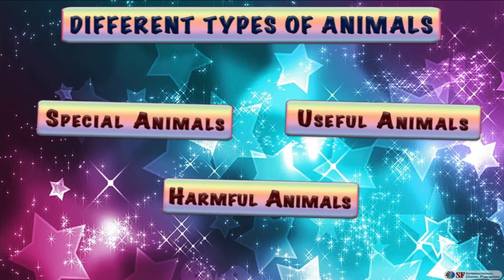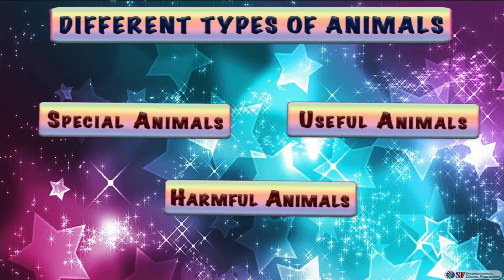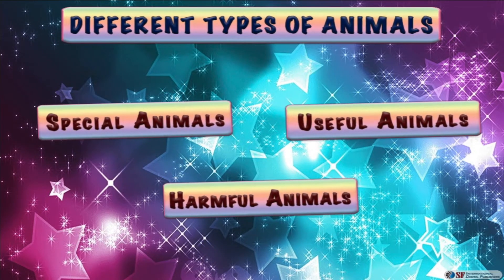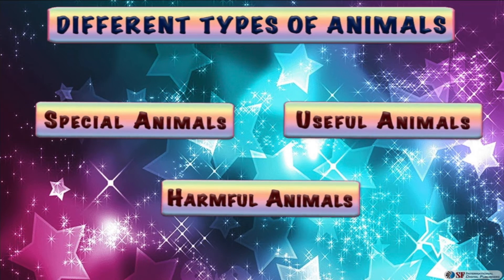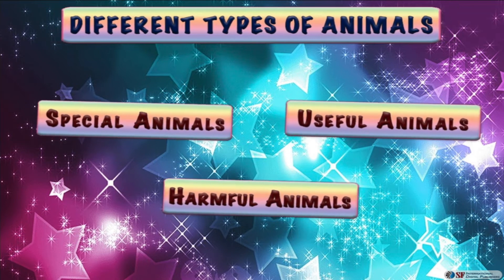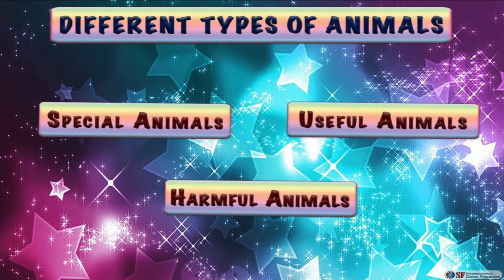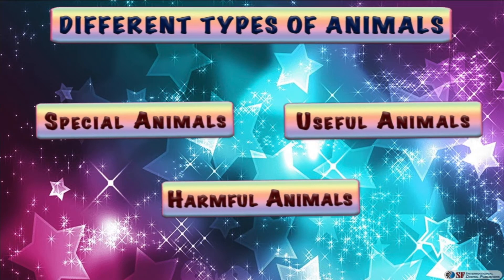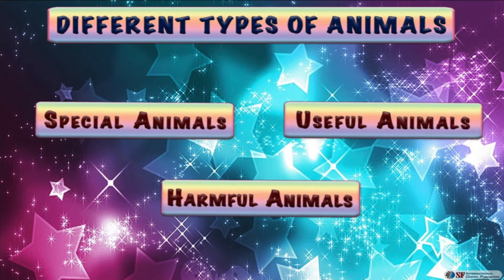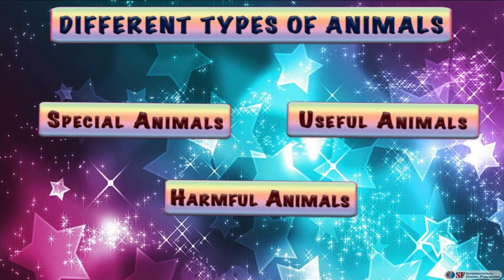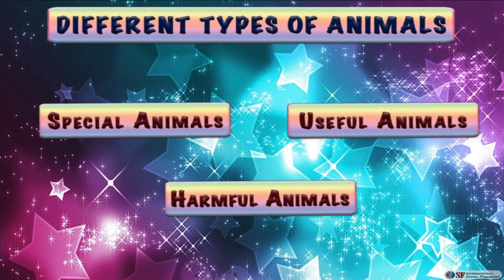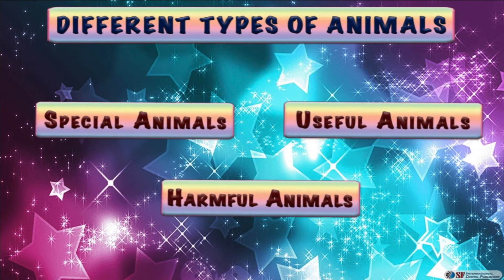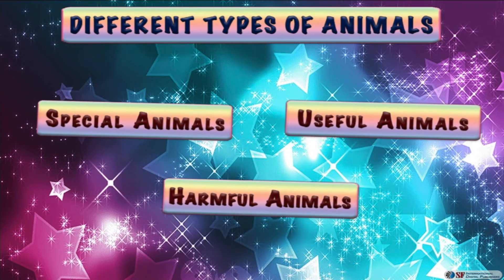Let's talk a little about different types of animals. Some animals adapt very well to their habitat, which we group as special animals. Some animals play an important role for our survival — we group them as useful animals. Some animals cause harm to human beings; they are grouped as harmful animals.